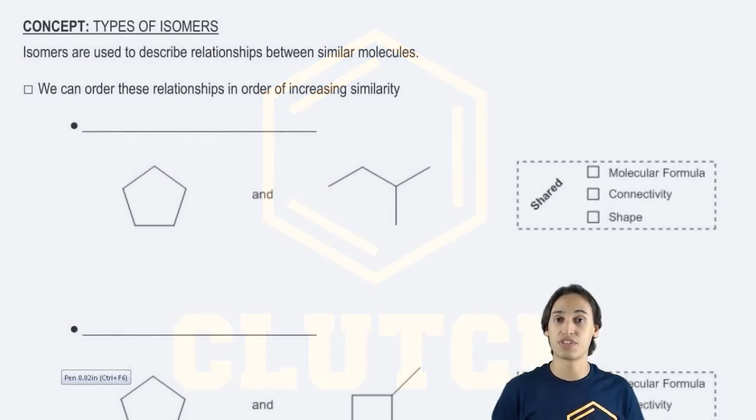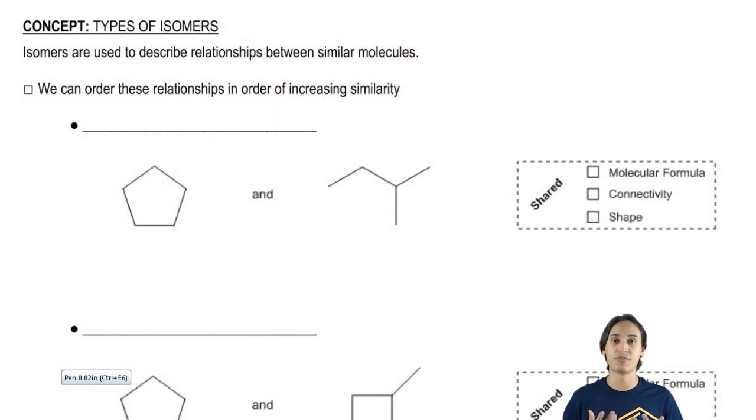The name of these types of isomers is called stereoisomers and that's going to be the topic of this whole chapter. So what I want to do at the very beginning just to get started is go through these different types of isomers so you guys can visualize these for yourself.